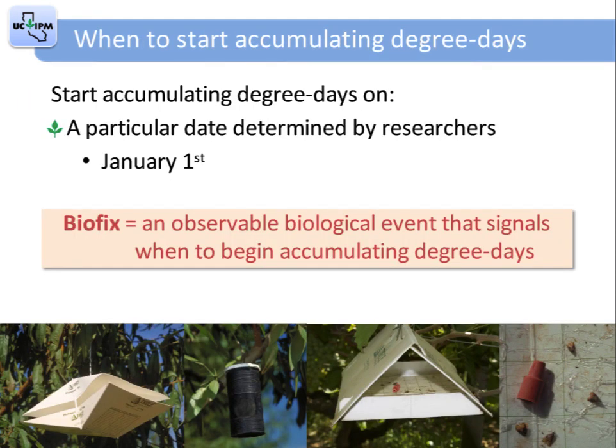Now for an important question: how do we know when to start accumulating degree days? Accumulation starts either on a particular date — for instance January 1st — or on the biofix date. A biofix is an observable biological event, such as the first pheromone trap catch or egg laying. The biofix for omnivorous leaf roller is the date when traps start consistently catching moths. For navel orange worm, it is when 50% of the egg traps have eggs.